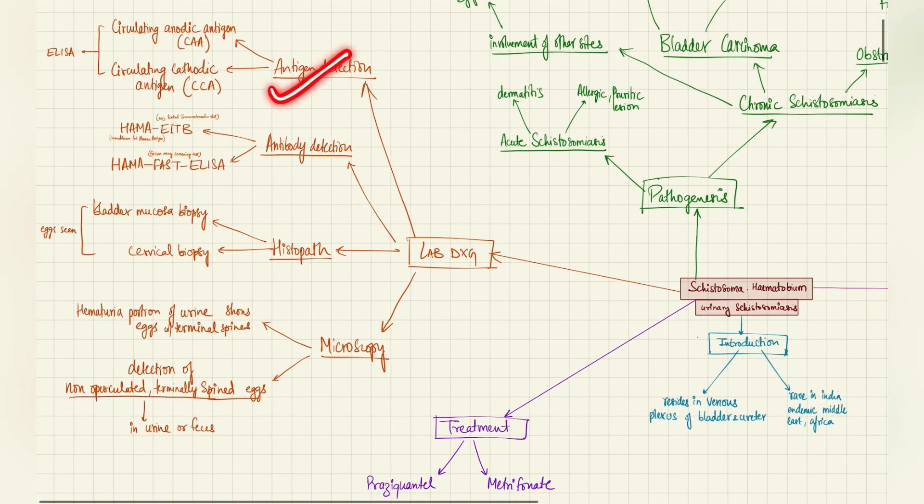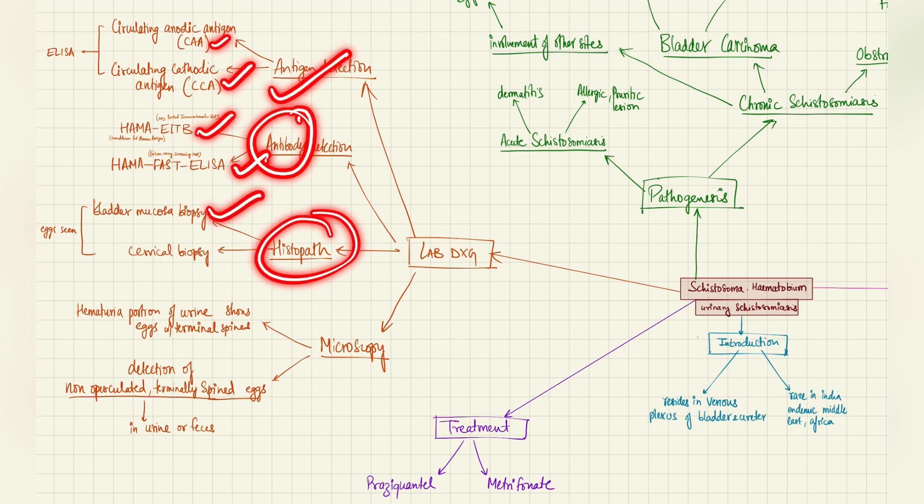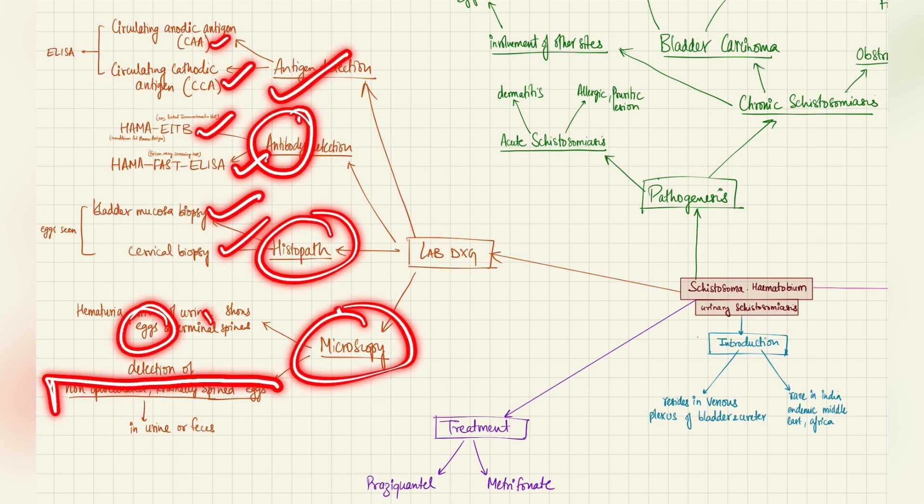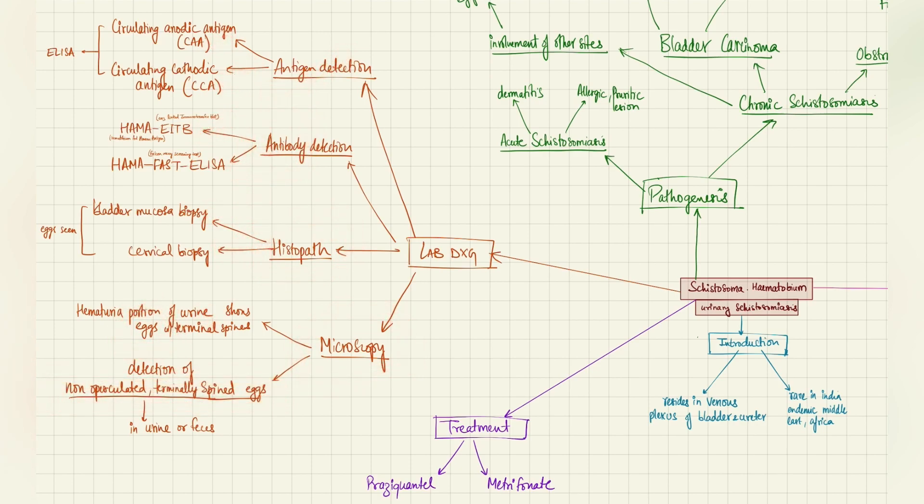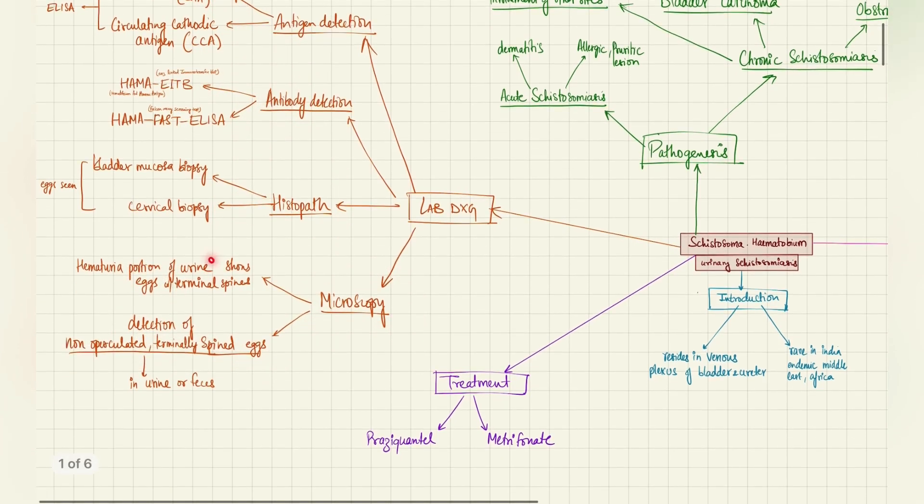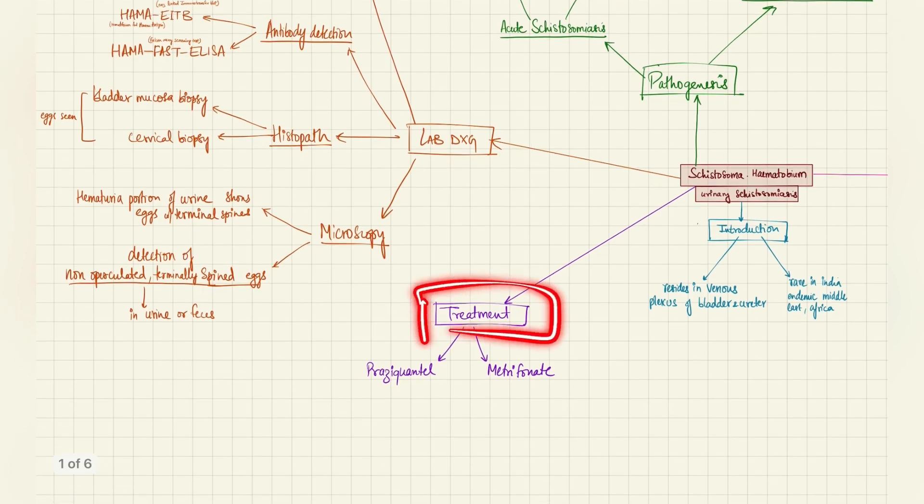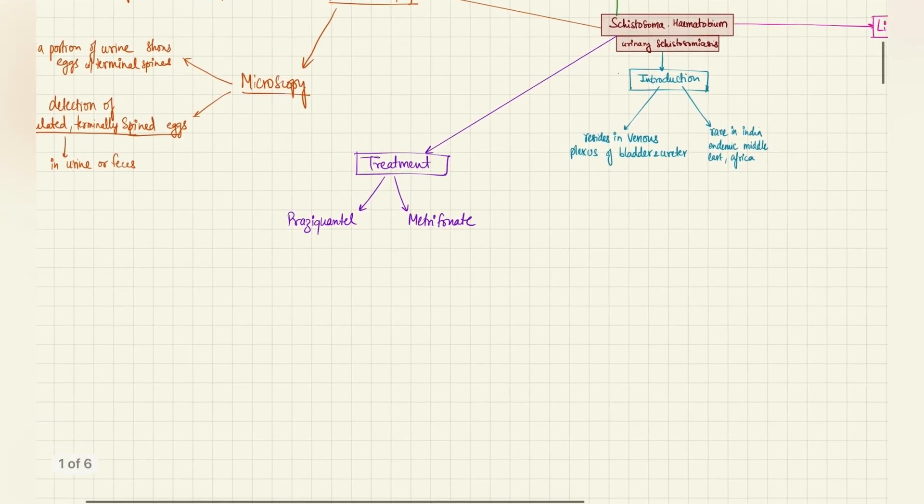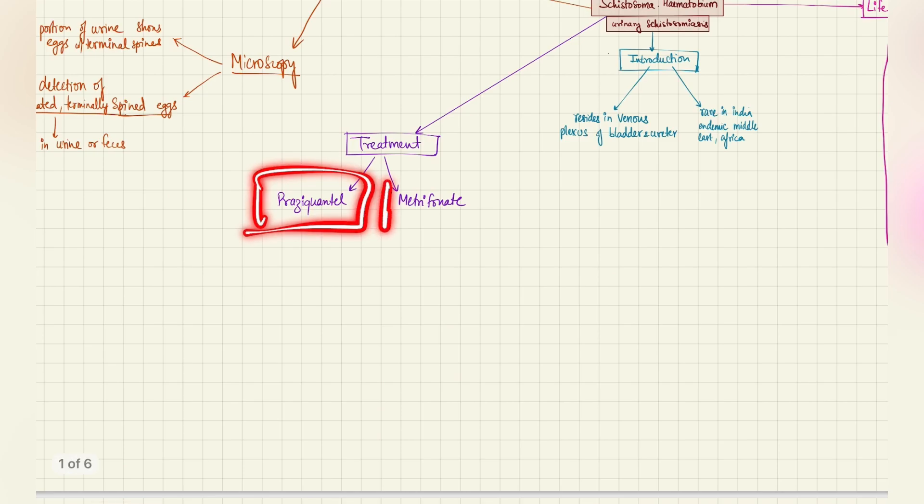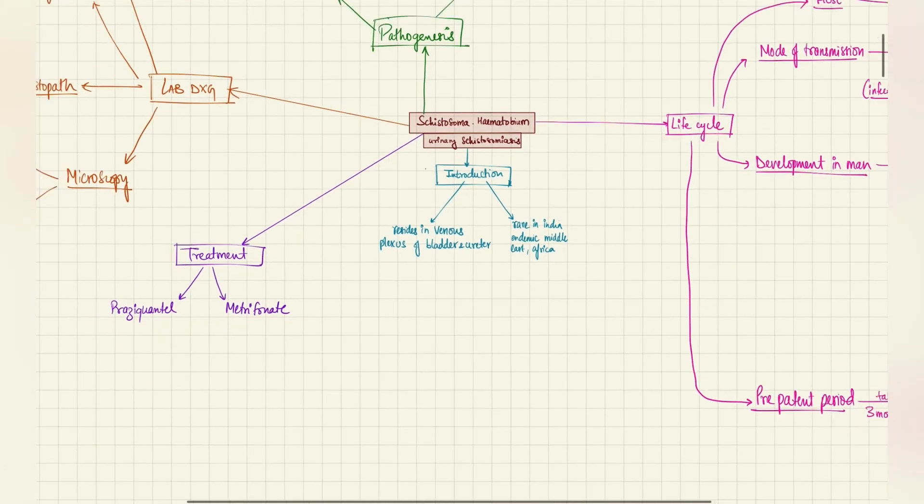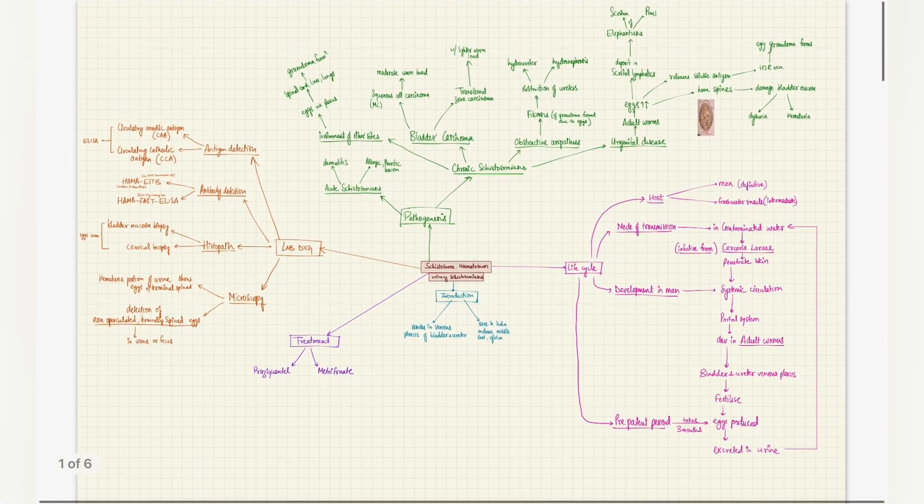This is the lab diagnosis: antigen detection CAA, CCA; antibody detection HAMA-EITB, HAMA-FAST ELISA; histopath, bladder biopsy, cervical biopsy; microscopy, you have to detect the eggs which are characteristically non-operculated terminally spined eggs in the urine or the feces. Coming to the treatment briefly, just the names. Praziquantel is one of the treatment options and metrifonate. I am not going into the details of the treatment since this is a microbiology discussion.